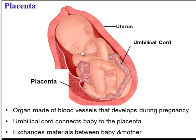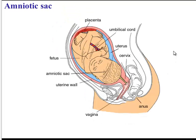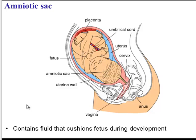Meanwhile, the baby is producing waste, so those wastes will pass through the umbilical cord into the placenta, into the mother's circulatory system, and then she'll dispose of the waste. Another structure that develops during pregnancy is the amniotic sac — a sac full of fluid called amniotic fluid, which helps cushion the fetus during development.